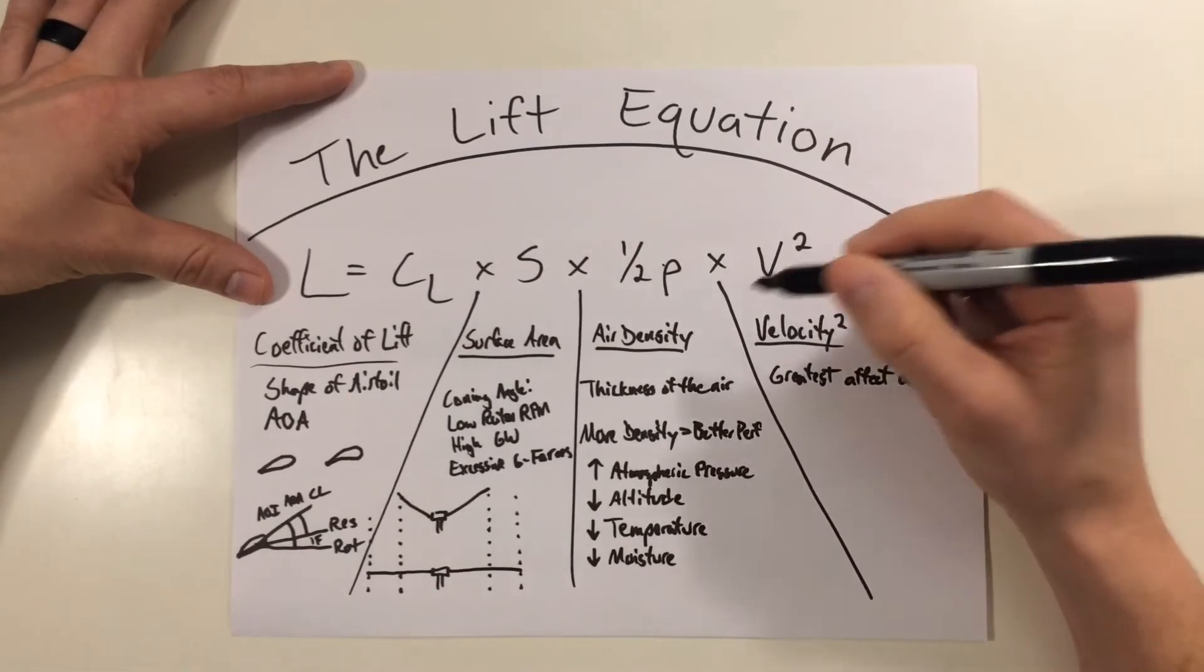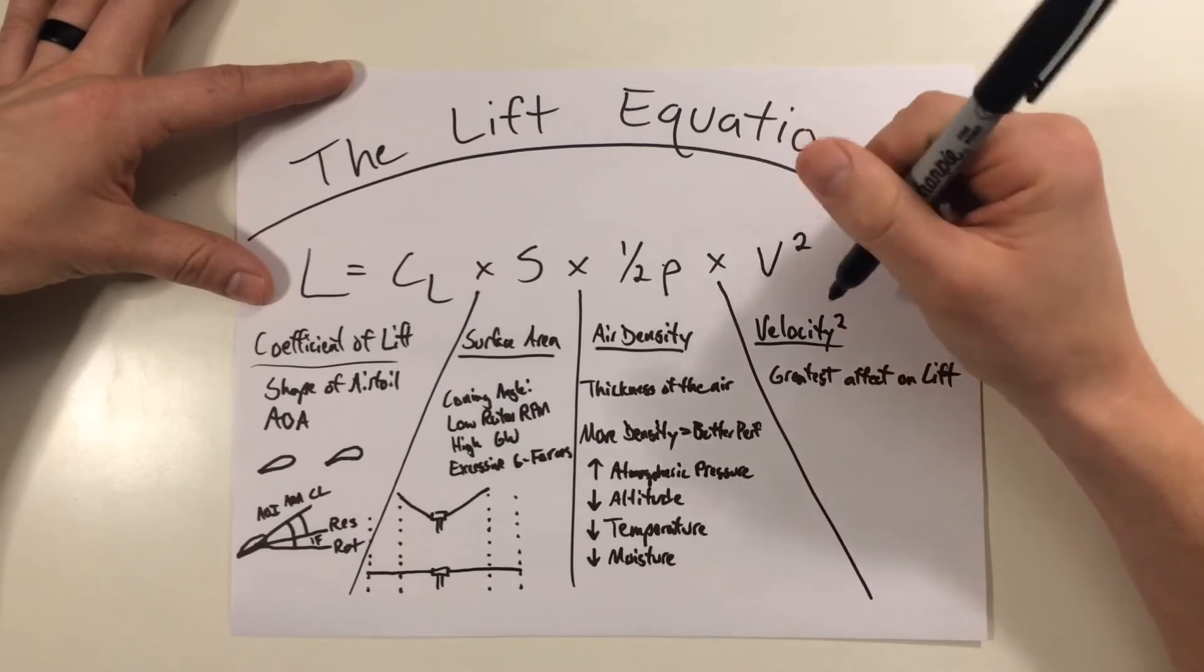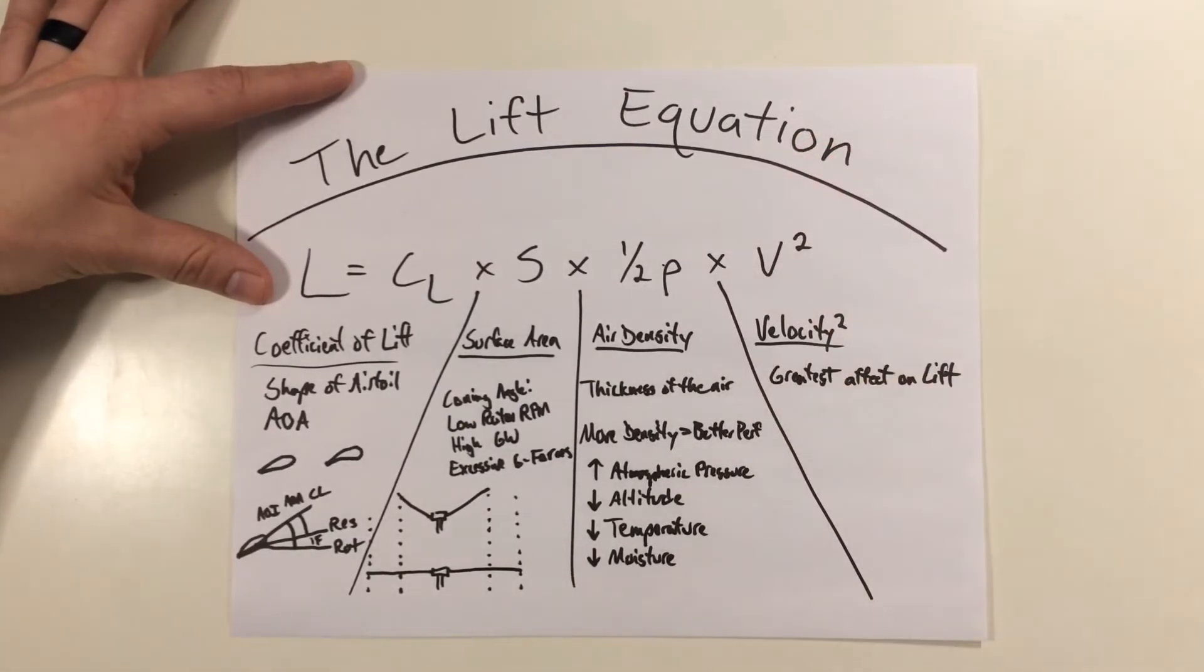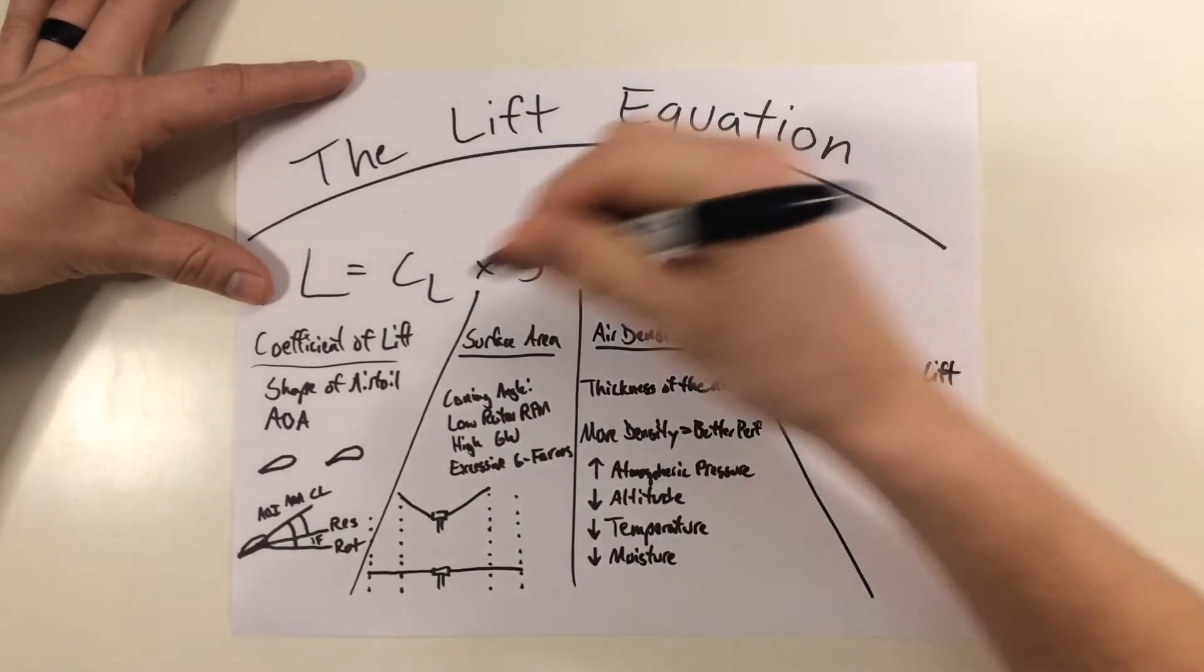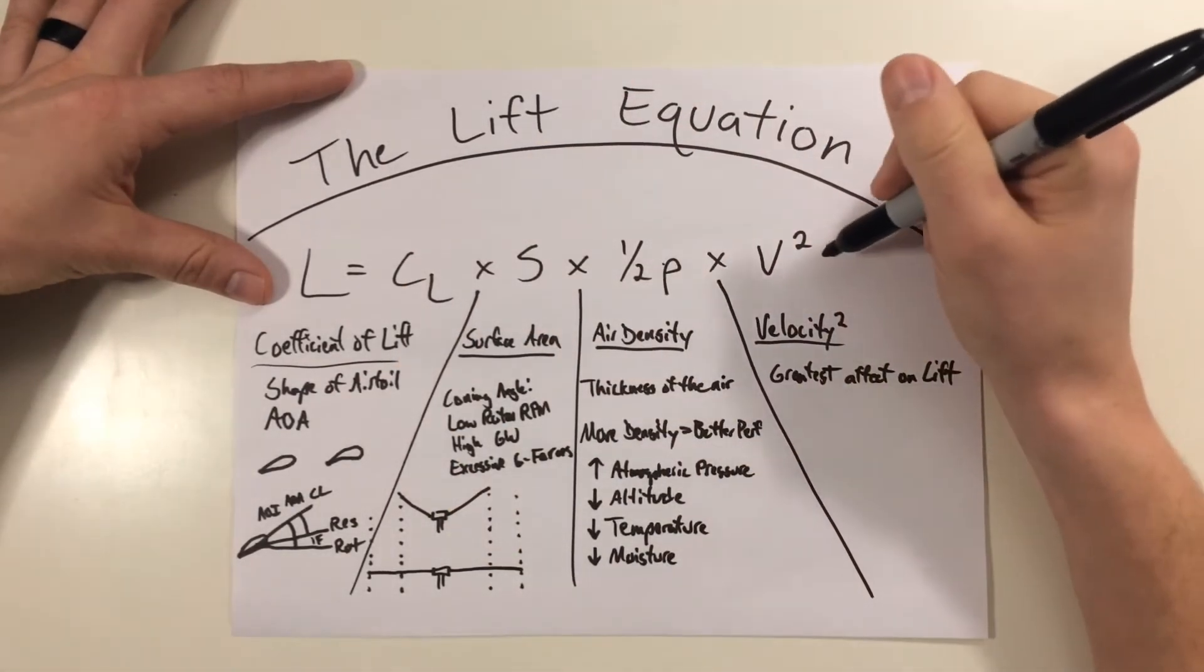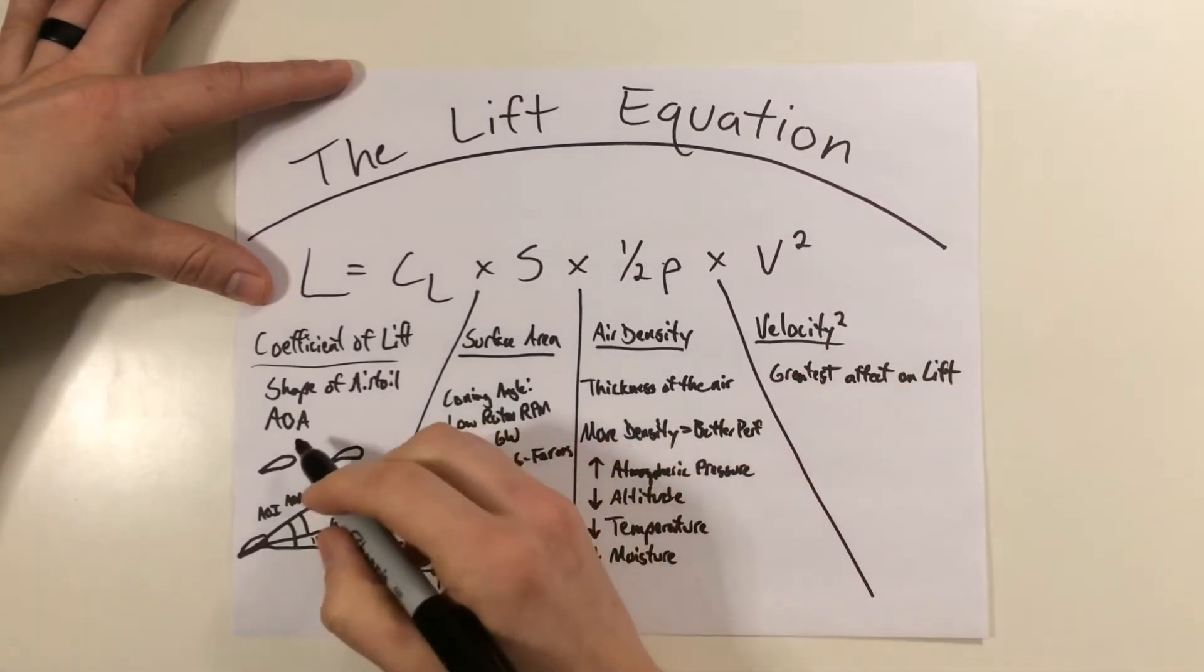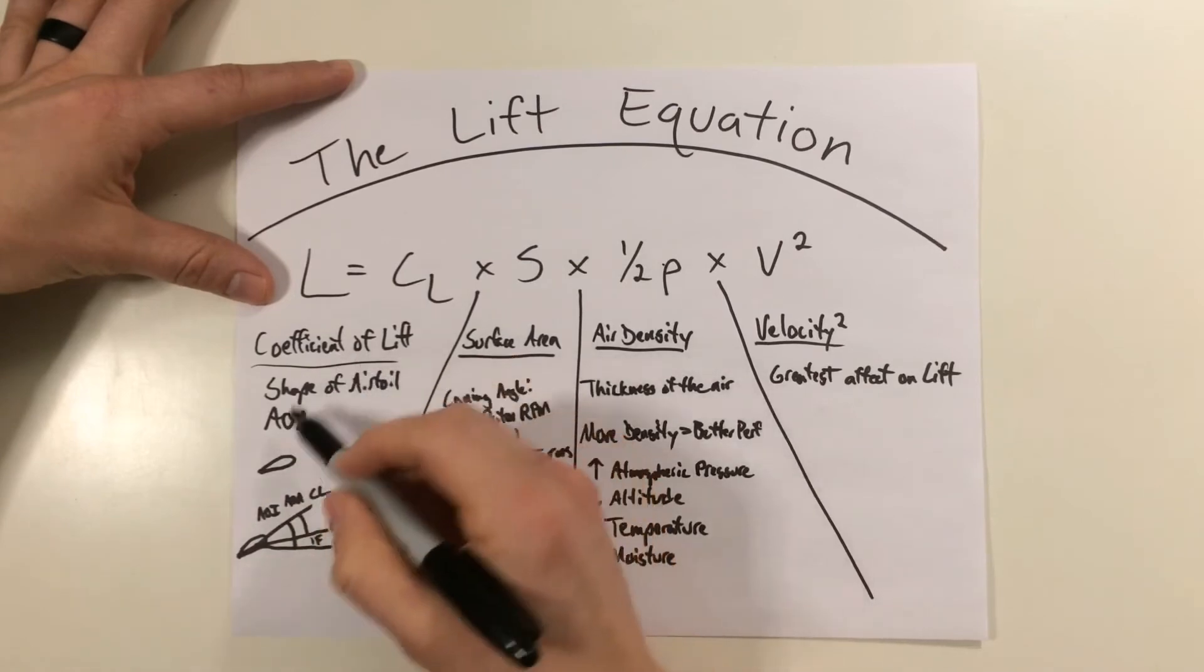If velocity is halved, then lift is going to be quartered. So this loss in air velocity could hold true even if or could even affect other factors or variables in this equation. So if velocity is allowed to decrease enough, you could potentially have a stall condition because your angle of attack could cause a stall. It could affect your coefficient of lift.